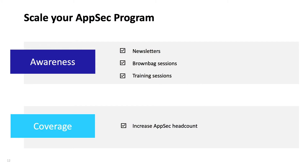Another way to scale is adding headcount to an application security team, but that typically has limitations. Many organizations don't fund AppSec like they do application development teams, and AppSec doesn't exactly make money for most companies. Competition for good candidates is also fierce. So adding virtual headcount with an application security champions program allows a small AppSec team to extend its reach throughout the organization — finding interested developers, testers, and tech leads who can be radiators of information and knowledge.